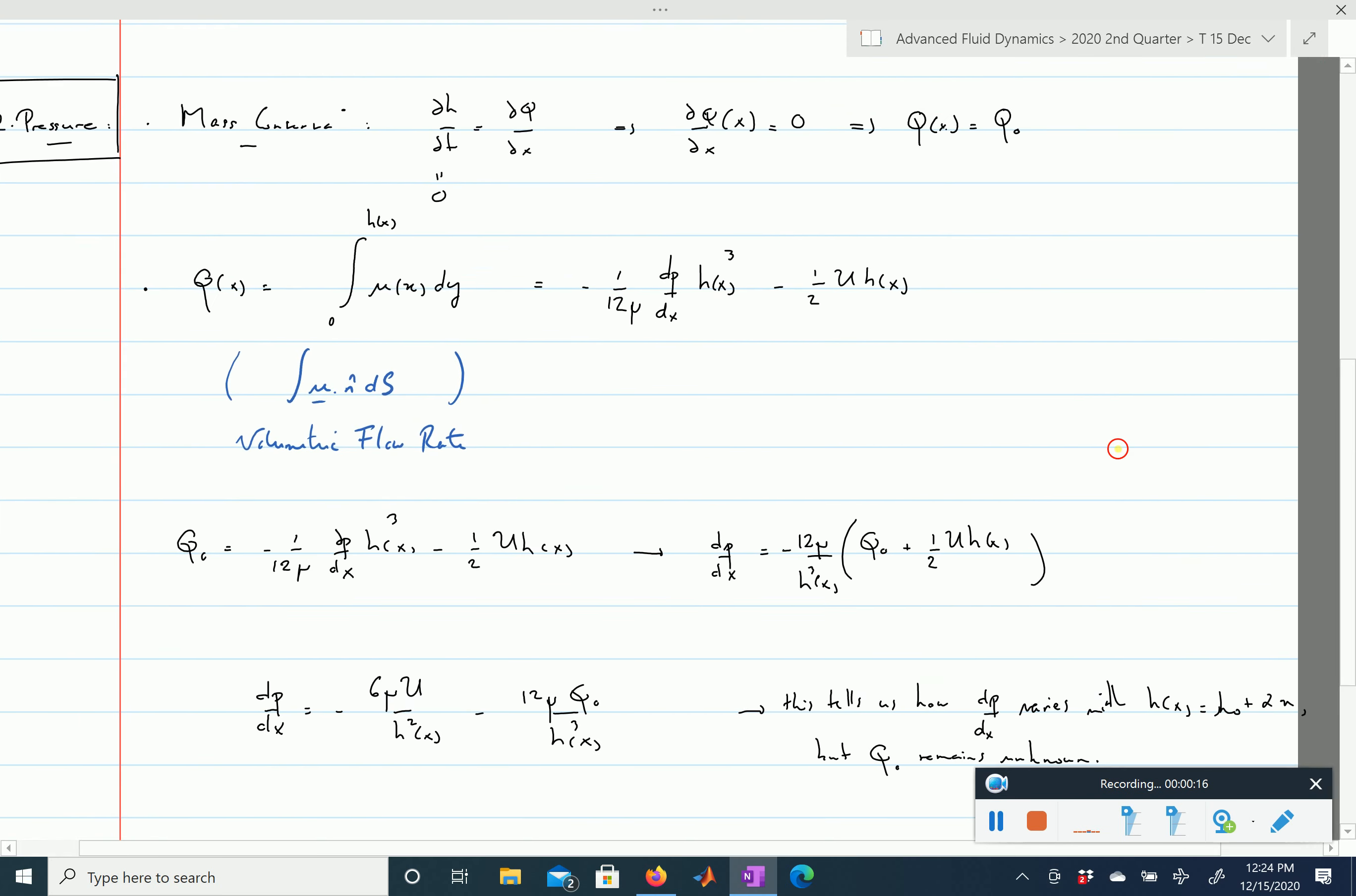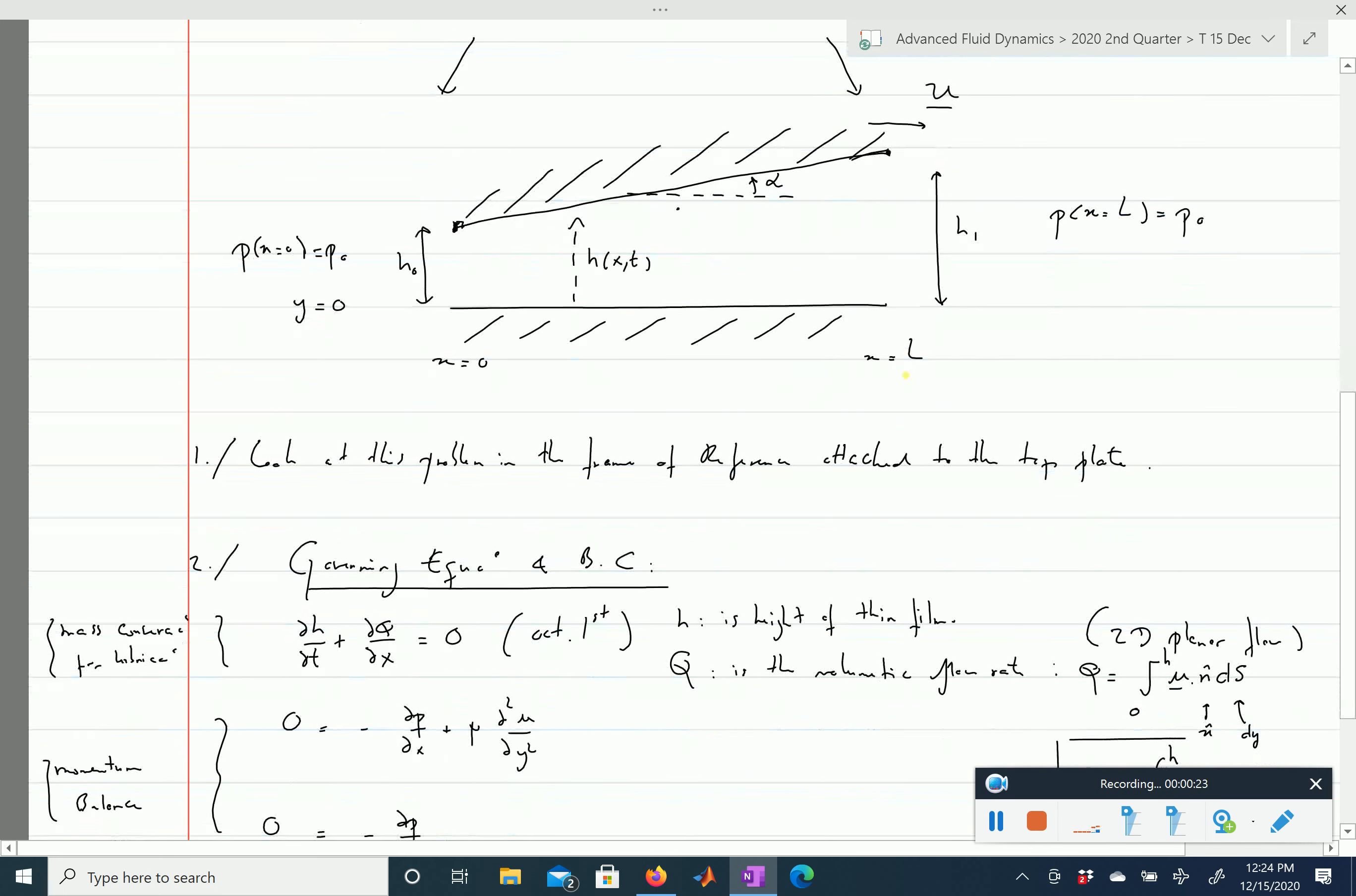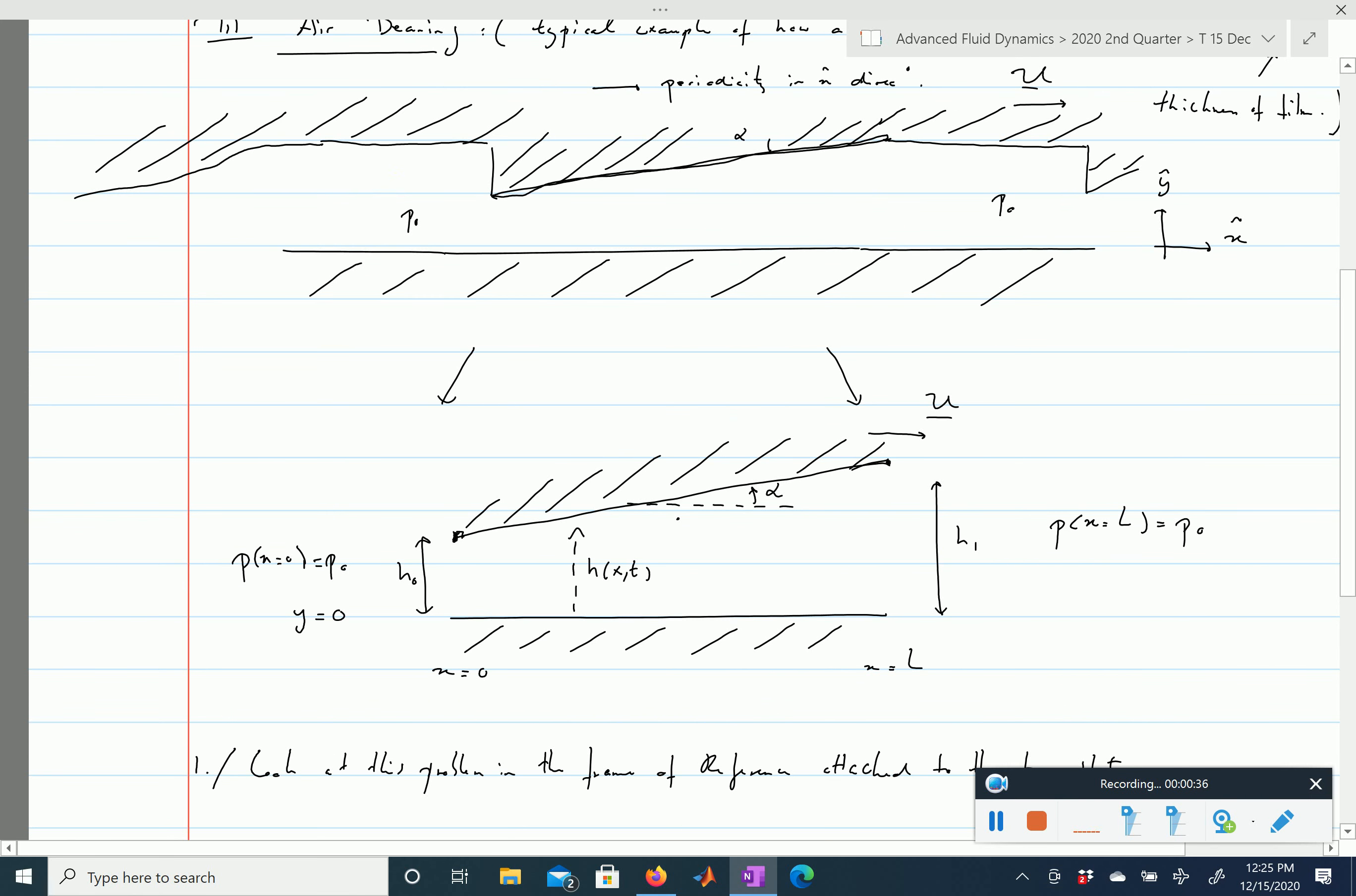Remember that now we were able to get an expression for the change of pressure with x, but what we haven't said here yet is that the pressure we know at x equals 0 is going to be the same as the pressure at x equals L, so essentially these two spots here are in contact with atmospheric pressure and therefore eventually between here and here the pressure just returns to its initial value.